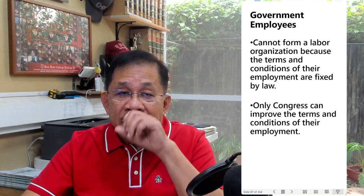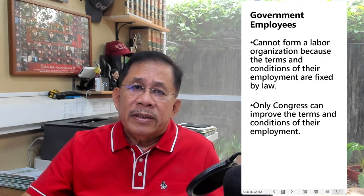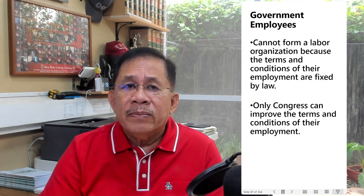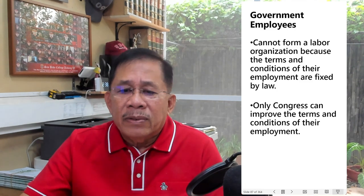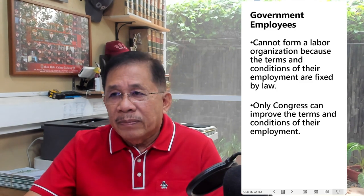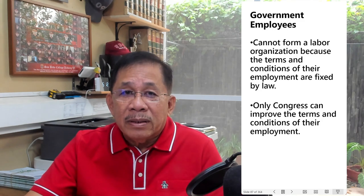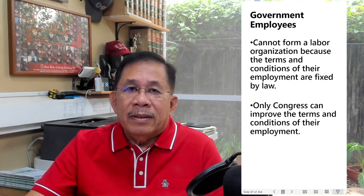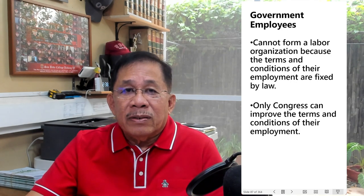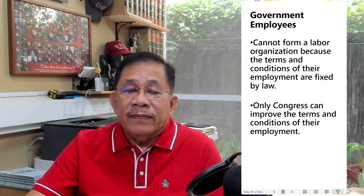Government employees cannot form a labor organization because the terms and conditions of their employment are fixed by law, and only Congress can improve those terms and conditions. In short, the terms and conditions of employment of government employees cannot be improved through collective bargaining.